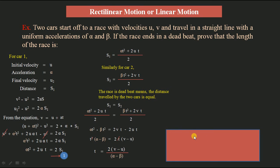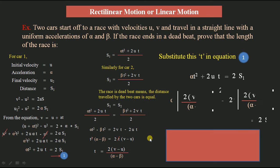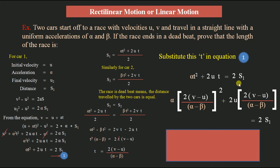Now substitute t = 2(v − u)/(α − β) back into equation for s1: s1 = [α·(2(v−u)/(α−β))² + 2u·(2(v−u)/(α−β))] / 2. Expanding and simplifying this expression yields the required result: s = 2(u − v)(uβ − vα) / (β − α)².